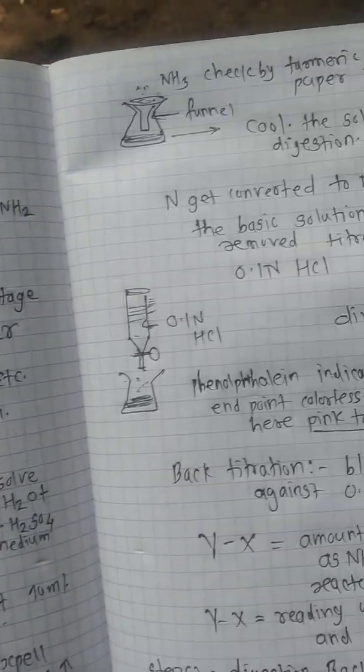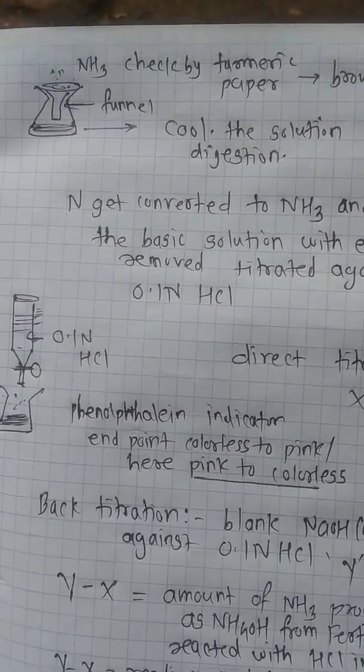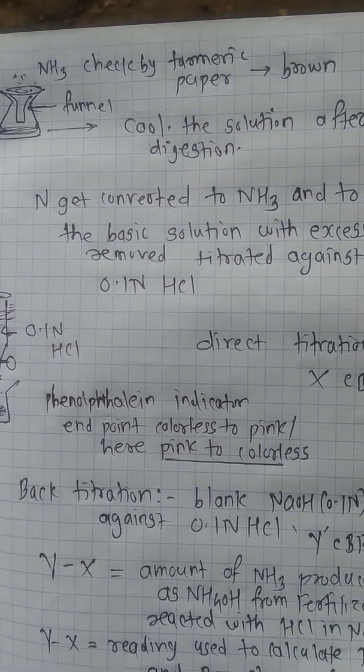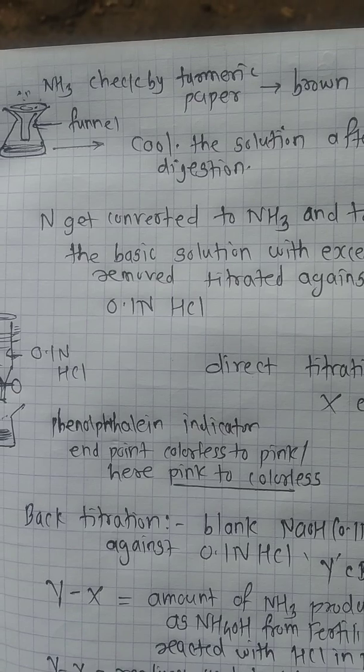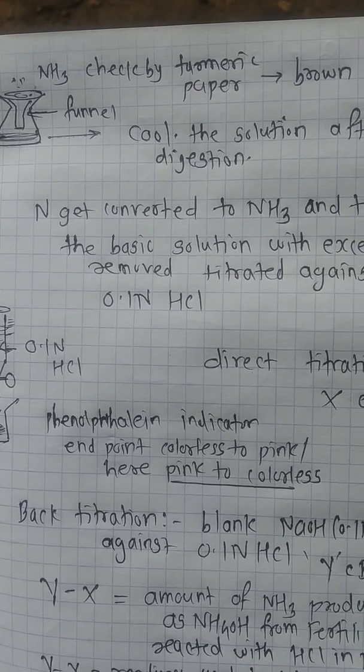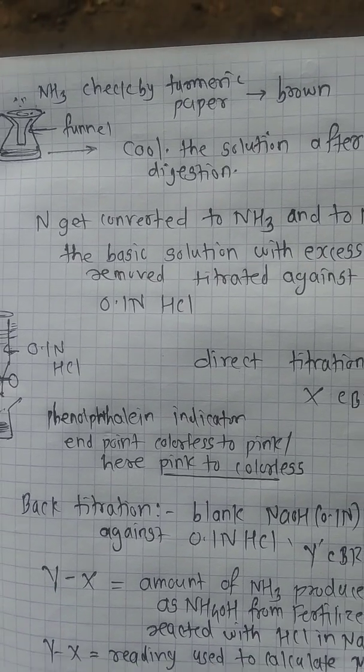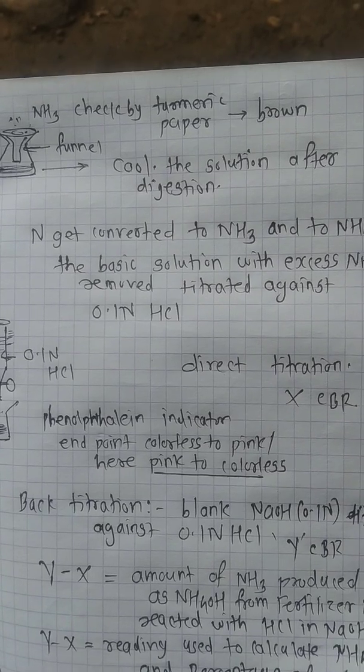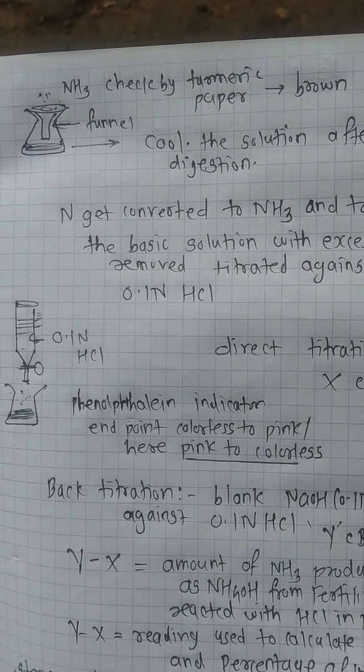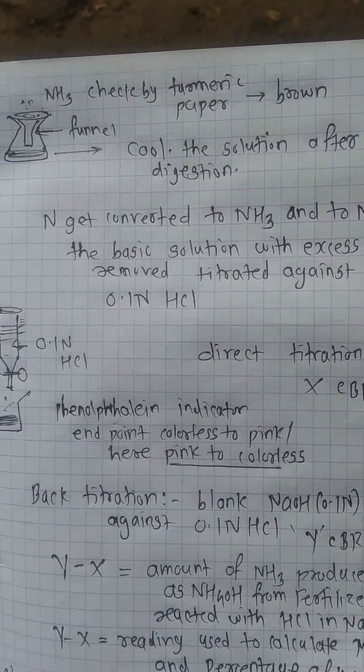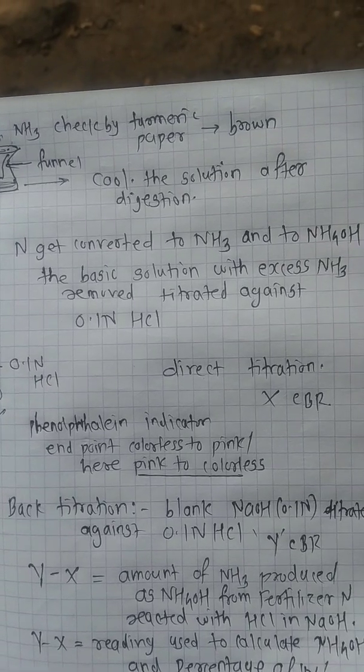After digestion, you have to expel out the ammonia, which is checked by turmeric paper. When it becomes brown, the solution is then cooled to normal room temperature. When the solution gets cooled, the nitrogen converted into ammonia as NH4OH in the basic medium of the solution. Excess ammonia is expelled out.